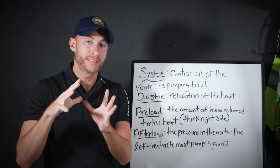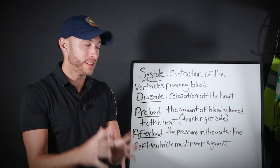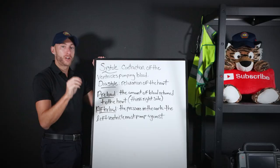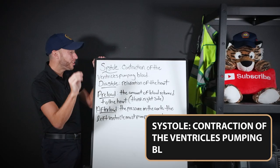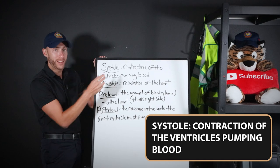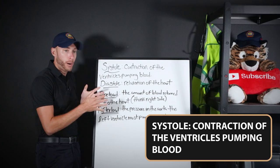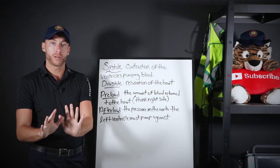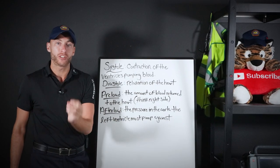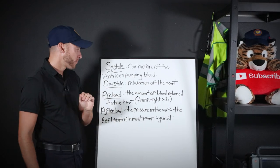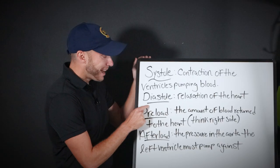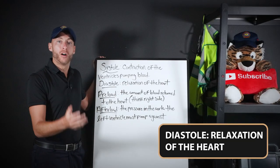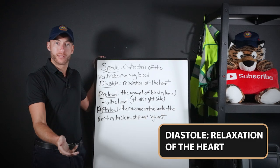So what does this mean at its first level? Systole is contraction of the ventricles — that's the bottom of the heart — pumping blood, moving blood forward. That is the action phase. Diastole is the relaxation of the heart.